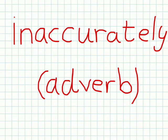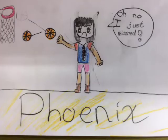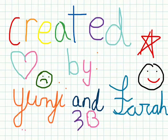Another form of inaccurate is inaccurately, which is an adverb. Another example is, at the basketball game, a player shot the ball inaccurately.